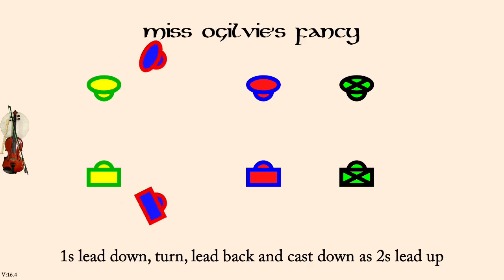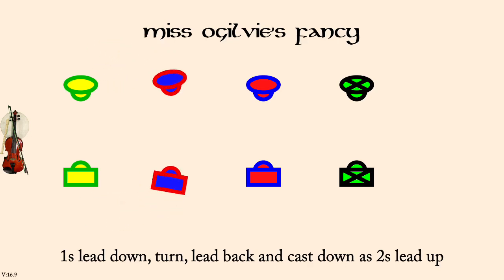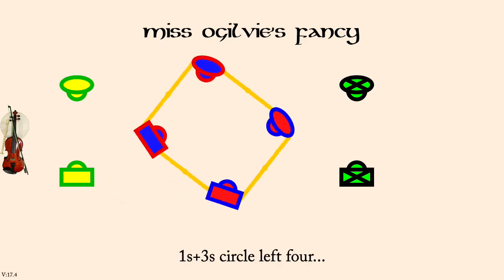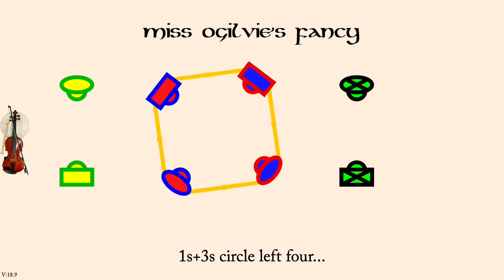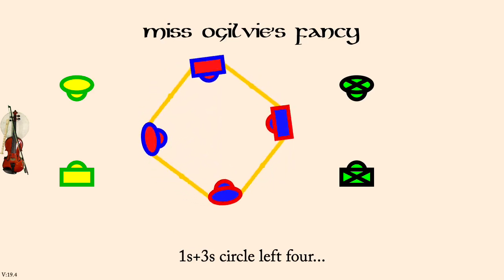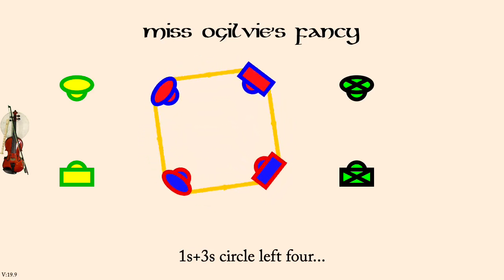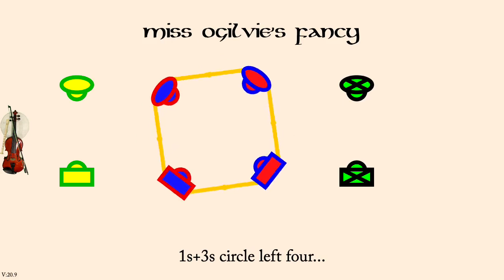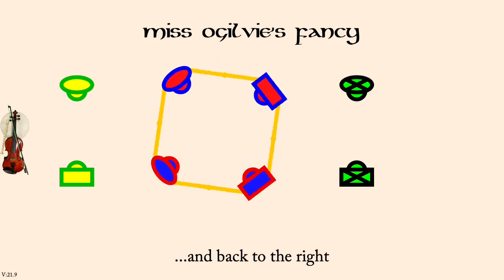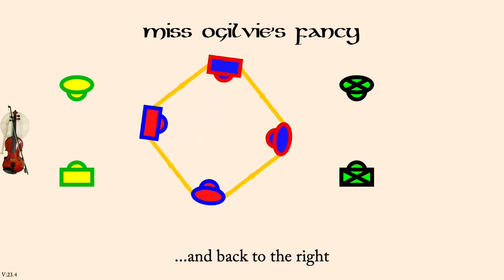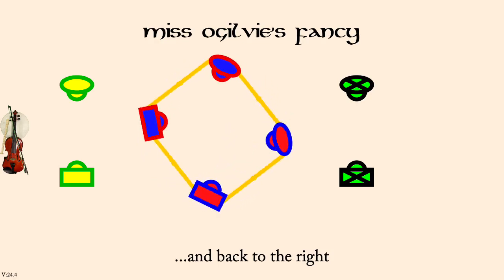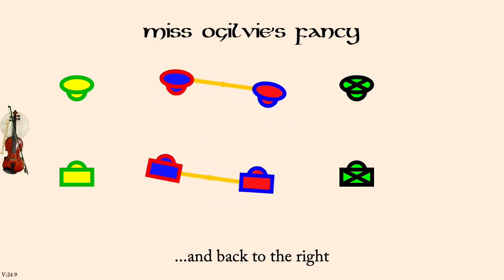Once in threes, circle left, four. And back to the right. Twos and ones, rights and lefts.